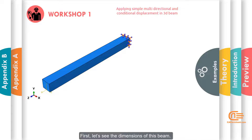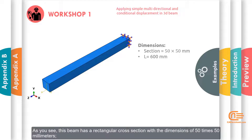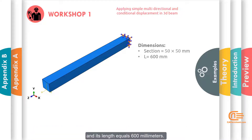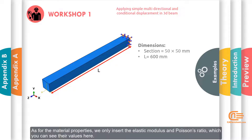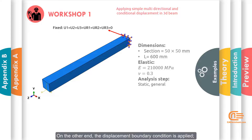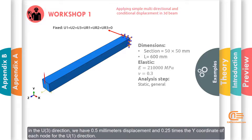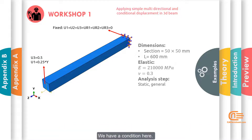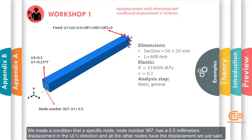First, let's see the dimensions of this beam. This beam has a rectangular cross-section with dimensions of 50 x 50 mm and its length equals 600 mm. As for the material properties, we'll insert the elastic modulus and Poisson's ratio, whose values you can see here. The analysis step is static general. One end of this beam is fixed. On the other end, a displacement boundary condition is applied. In the U3 direction, we have 0.5 mm displacement, and 0.25 times the Y-coordinate of each node for the U1 direction. We also have a condition: a specific node — node number 367 — has a 0.5 mm displacement in the U1 direction, while all other nodes have the displacement we just set.